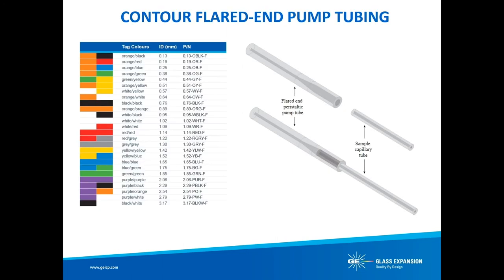It can often be quite difficult to insert sample tubing into the peristaltic pump tube, particularly when the pump tube has a small internal diameter — for example, internal standard tubing with an ID of 0.2 to 0.4mm, which is incompatible with sample capillary tubing OD of 1.3 or 1.6mm. To facilitate this connection, Glass Expansion supplies a contour range of flared end pump tubing. The flared end allows the larger sample capillary tubing to be inserted, and the flaring process is trace metal-free to avoid contamination. We offer contour flared end tubing for PVC, Tigon, Salva, and Viton.